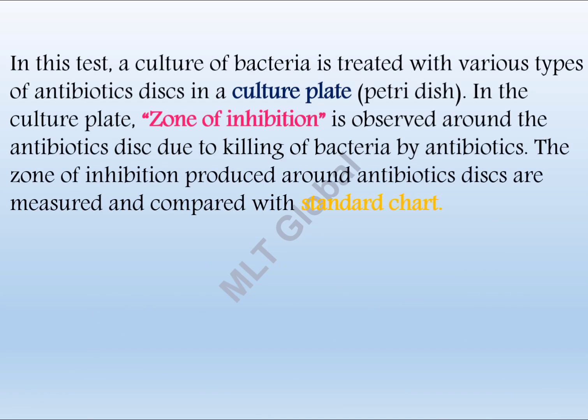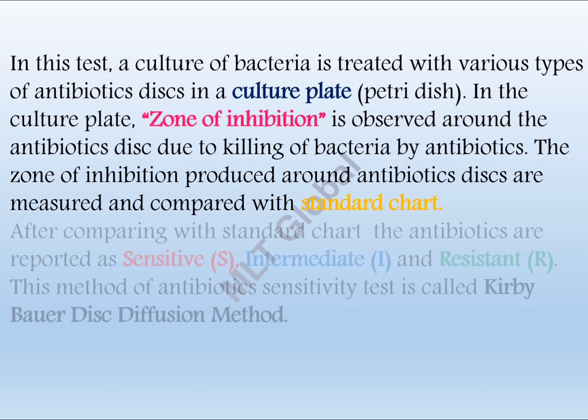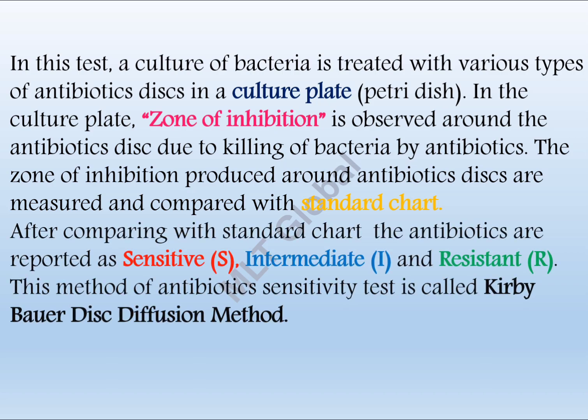In this test, a culture of bacteria is treated with various types of antibiotic discs in a culture plate or Petri dish. A zone of inhibition is observed around the antibiotic disc due to killing of bacteria by antibiotics. The zones of inhibition produced around each antibiotic disc are measured and compared with a standard chart. After comparing, the antibiotics are reported as Sensitive (S), Intermediate (I), or Resistant (R). This method is called the Kirby-Bauer Disc Diffusion Method.